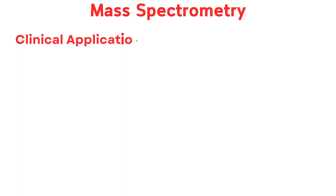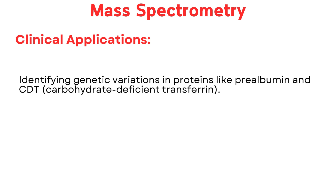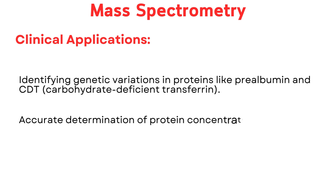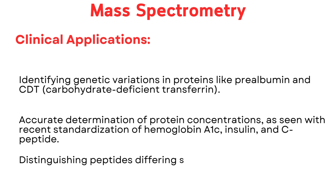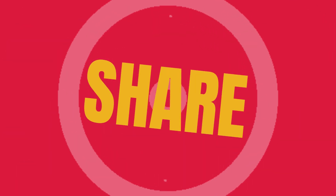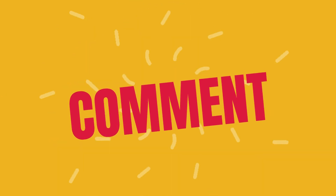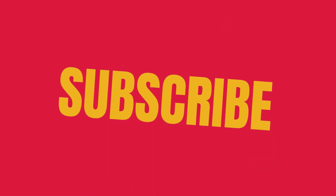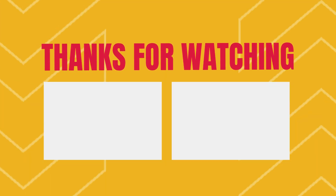Clinical applications of MS include identifying genetic variations in proteins like prealbumin and carbohydrate-deficient transferrin (CDT), accurate determination of protein concentrations such as hemoglobin A1c, insulin, and C-peptide, and distinguishing peptides differing slightly in sequence or due to modifications. Share this information with friends who might find it beneficial, leave questions or comments below, and don't forget to ask for the ASCP short notes to supplement your studying — a great resource to review and retain the information covered in these videos.